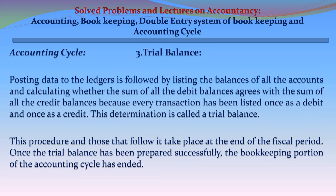Step 3 - Trial Balance: Posting data to the ledgers is followed by listing the balances of all accounts and calculating whether the sum of all debit balances agrees with the sum of all credit balances, because every transaction has been listed once as a debit and once as a credit. This determination is called a trial balance. This procedure takes place at the end of the fiscal period. Once the trial balance has been prepared successfully, the bookkeeping portion of the accounting cycle has ended.